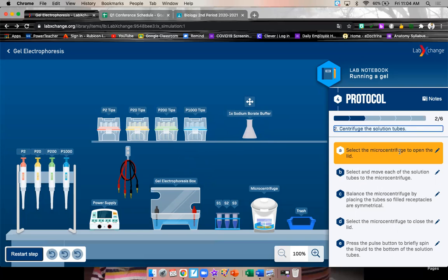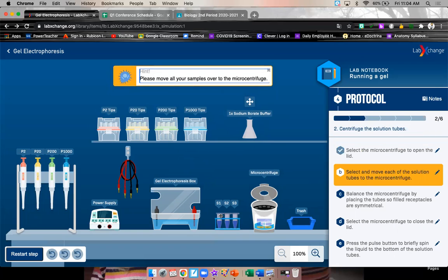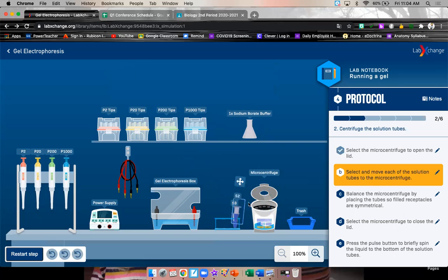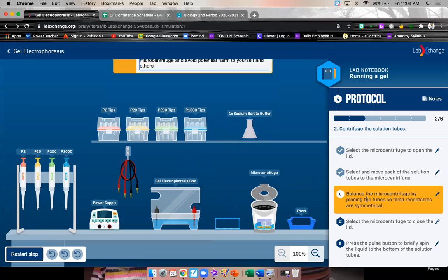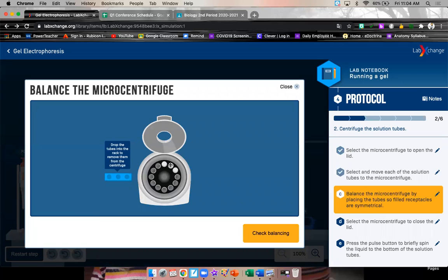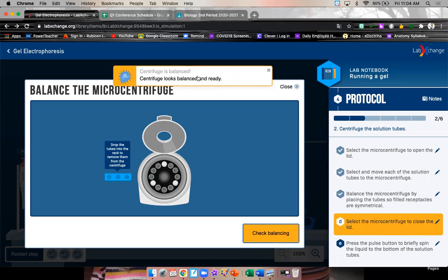Next, select the centrifuge to open the lid. Here's our centrifuge. Click on it to open it up. And we want to move our samples one by one into the centrifuge. This is going to spin it around really fast. Balance the microcentrifuge by placing the tubes so filled receptacles are symmetrical. That means we want to spread them evenly. So move it so you have three empty spaces in between each one. And check balancing. Centrifuge looks balanced and ready.